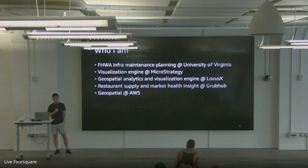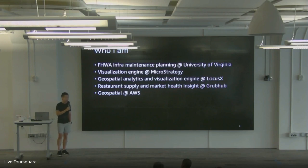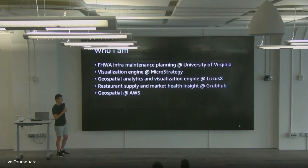A little bit about me. I spent most of my years in the United States in Virginia, as a PhD student stuck in graduate school. Then I worked for a BI company called MicroStrategy to lead their visualization engine team — that company right now is mostly famous for holding a lot of Bitcoins. Then I co-founded a startup myself called LocusX. We exited when we finished the CSA funding, and then the company moved back to Asia and got bought by another bigger corporation there. After that, I moved to New York and joined GrubHub, mostly doing restaurant and market visualizations for internal teams and also restaurant owners. That's where our team started to use Deck.GL.